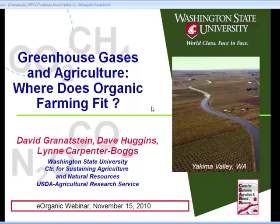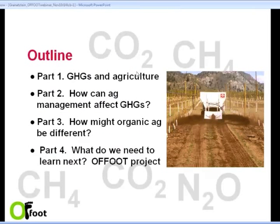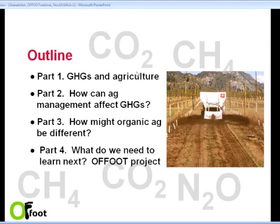Thank you very much for coming and joining us today. I'm going to give you a quick overview of what we'll do today. We've got four segments to our presentation. The first is a quick overview of the interaction of agriculture and greenhouse gases, which I'll be presenting. Then Dave Huggins will discuss how agriculture management in general influences greenhouse gases, followed by myself discussing how organic agriculture might be different and some of the management implications. The last part will be a discussion of knowledge gaps and potential next steps, which Lynn Carpenter Boggs will present.